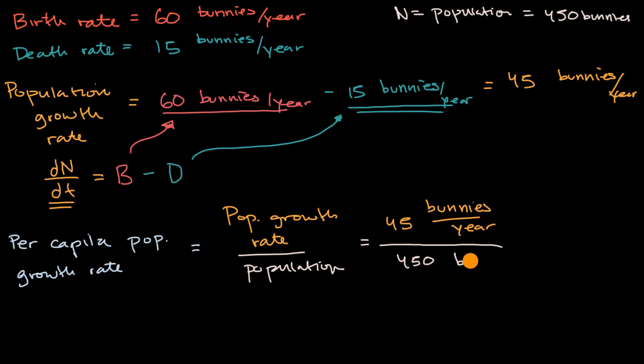And then the units, bunnies cancel with bunnies, so it's 0.1 per year. Now why is per capita population growth rate interesting?